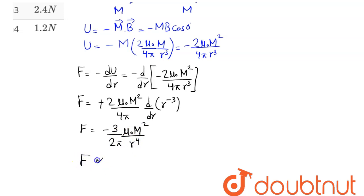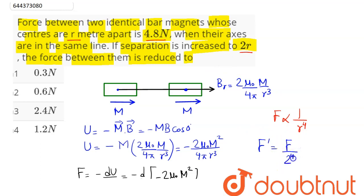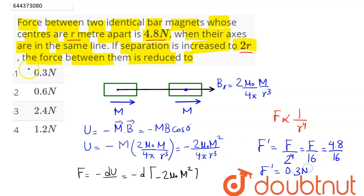The magnetic force is inversely proportional to the fourth power of the distance. Initially at distance r the force was 4.8 newton. When the distance is doubled to 2r, the force decreases by a factor of 2⁴ = 16. So the new force F' = 4.8 / 16 = 0.3 newton, which is the correct answer.